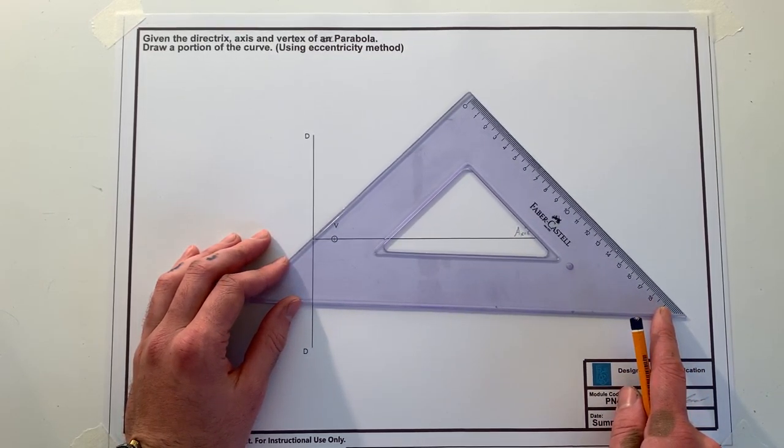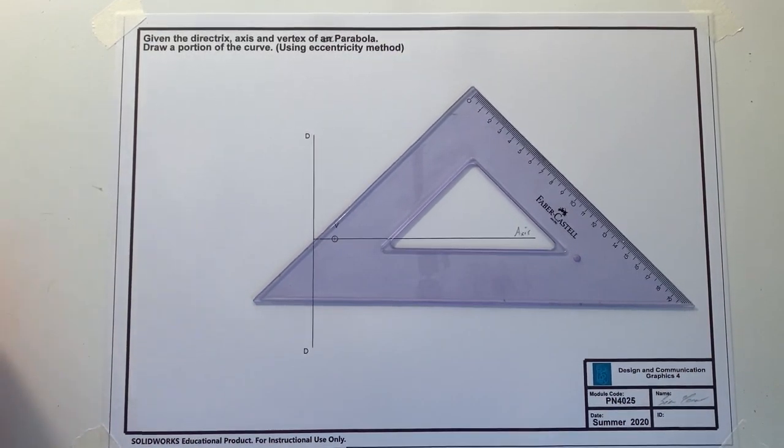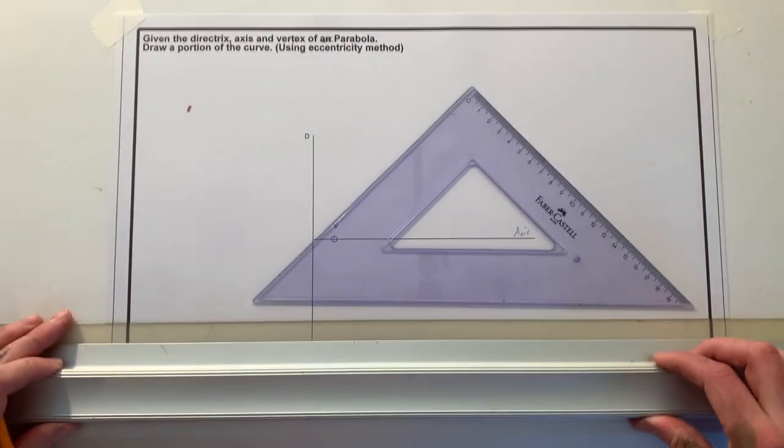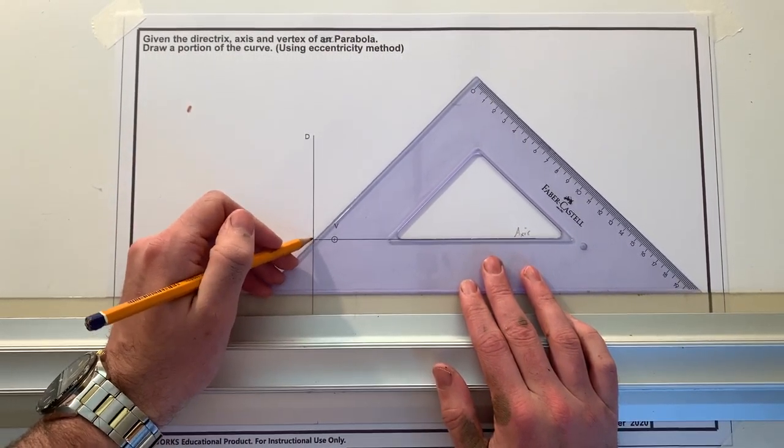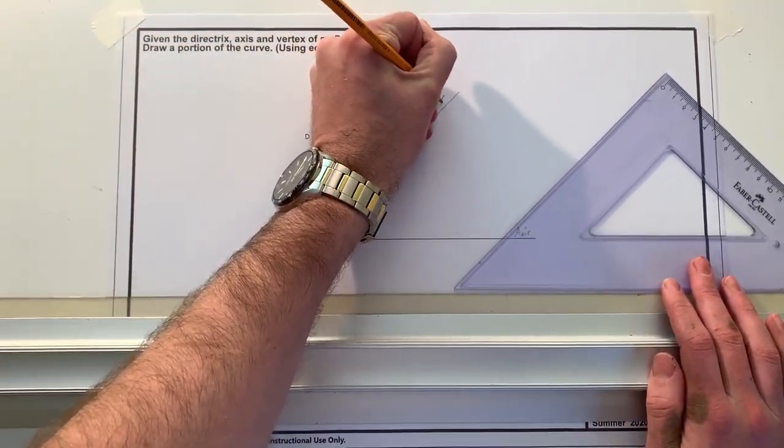If it was an ellipse it would have to be less than 45 degrees and if it was a hyperbola it would be more than 45 degrees. So now that we know it's going to be a parabola we know it's going to be 45 degrees. We go up like so, we can call that our ECC, and if you want you can indicate that that's at 45 degrees.